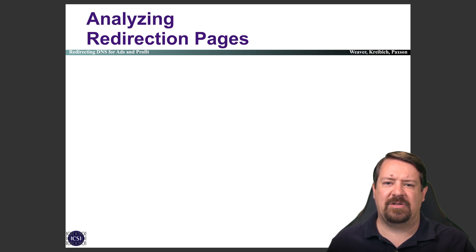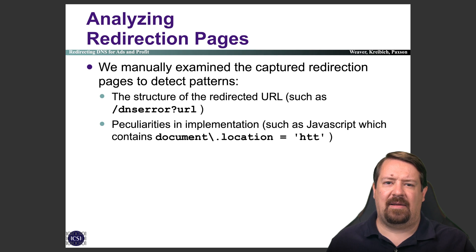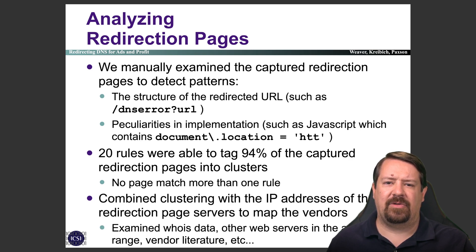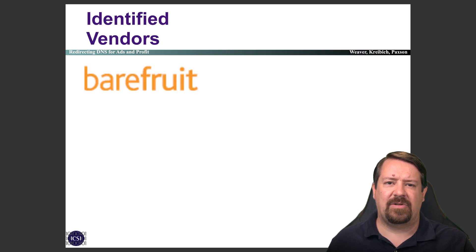If redirection is detected, the researchers capture those redirection pages and examine them, looking for patterns. At this point the user's NX domain has already been redirected to a website, and the client is loading a page that will eventually redirect them to an ad server. The researchers set up a number of rules to tag the captured redirection pages in order to see what sort of mechanisms they're using to redirect the client. They're then able to take these redirection pages and look at the IP addresses of the redirection page servers to figure out which vendors are providing this service — the vendors providing the redirection and ad-serving technology, not the ISPs using it.